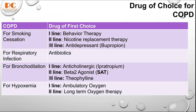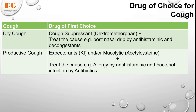Next is cough. For dry cough, use a cough suppressant like dextromethorphan, plus treat the cause — for example, post-nasal drip with antihistaminics or nasal decongestants. For productive cough, use an expectorant like potassium iodide and/or a mucolytic like acetylcysteine, and treat the cause with anti-allergic drugs like antihistaminics or antibiotics for bacterial infection.